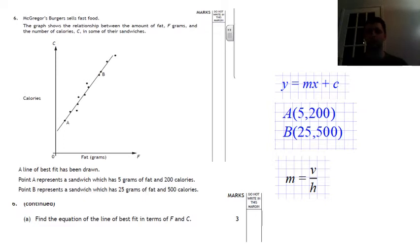So it's 200 to 500, the difference is 300. 5 to 25, the difference is 20. So that will be 300 divided by 20. So the gradient is 15. So we'll have a look at this next part of the equation on the next slide there.